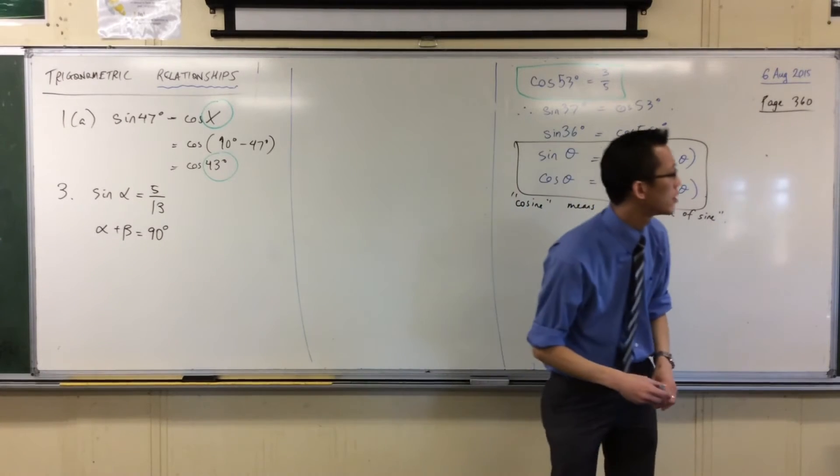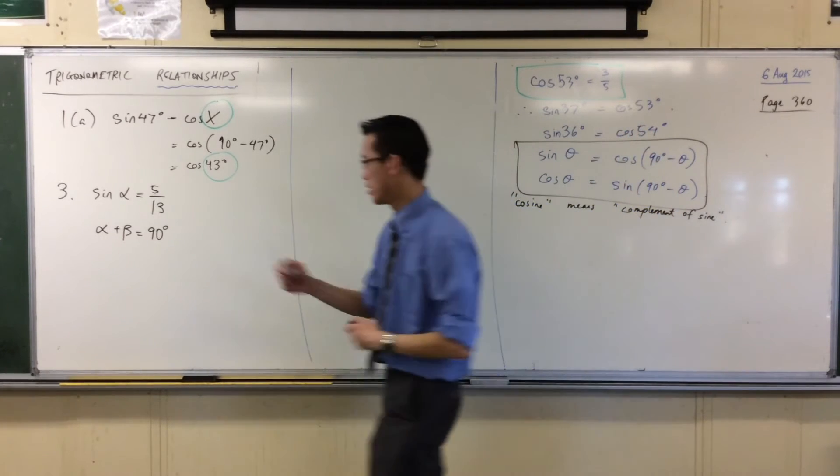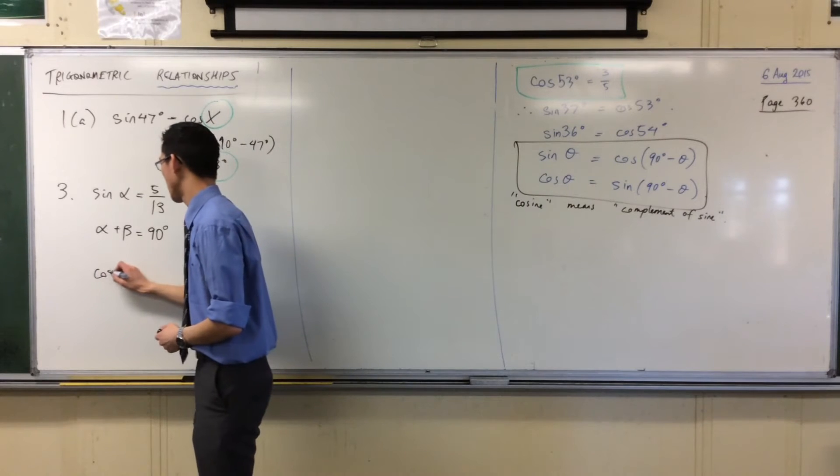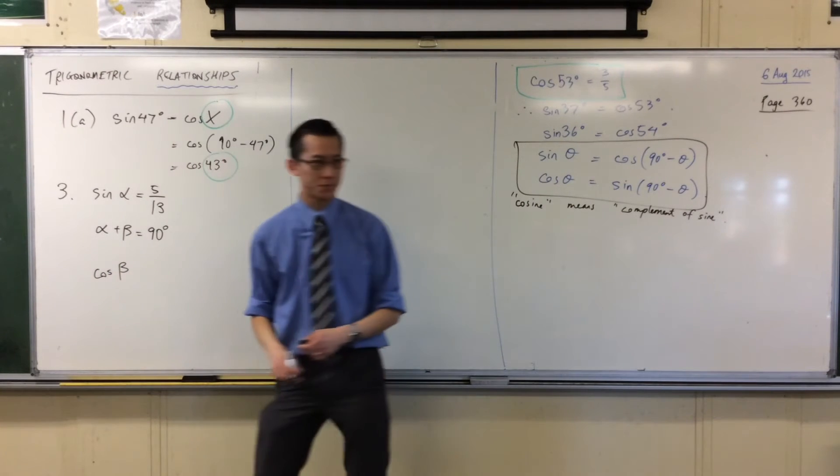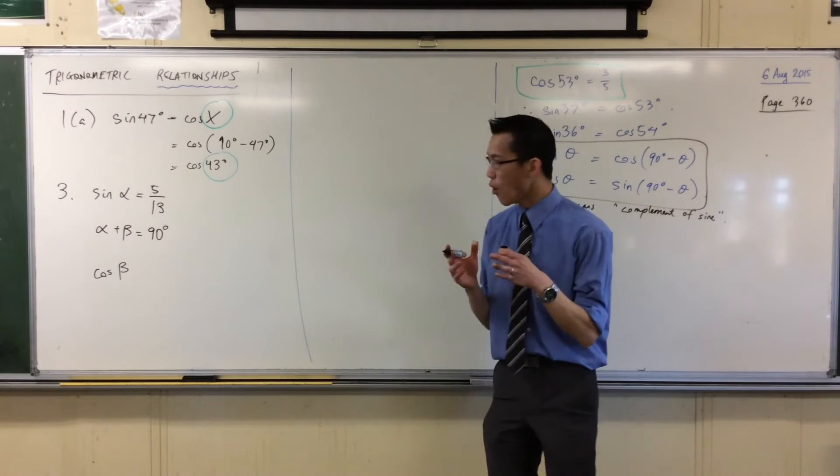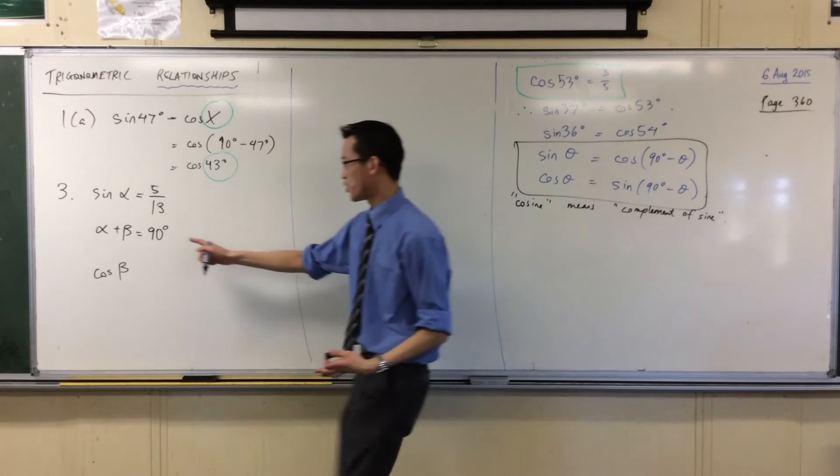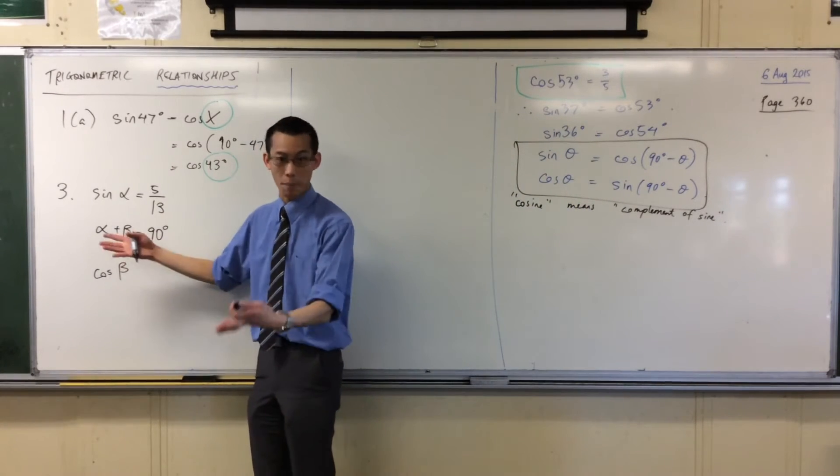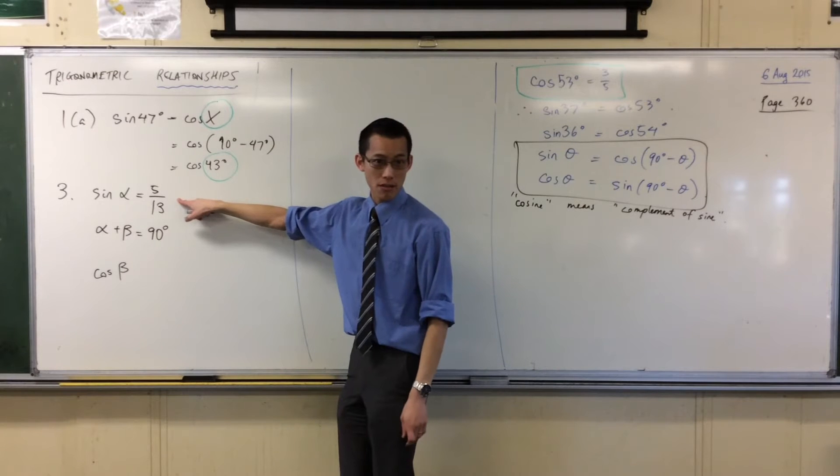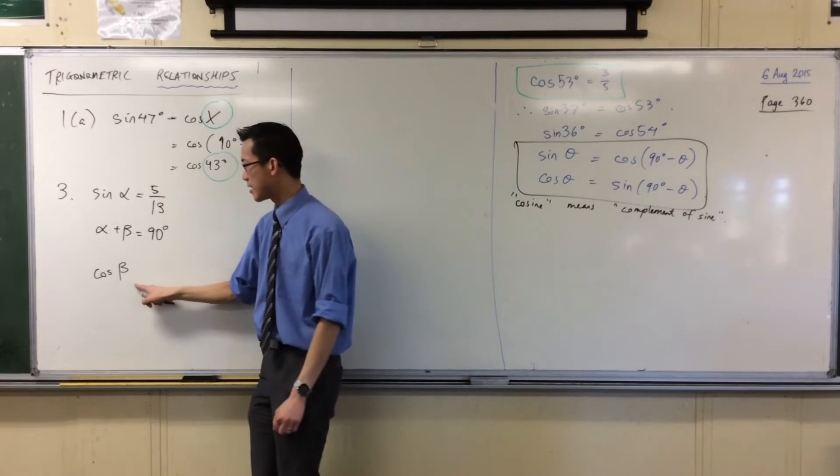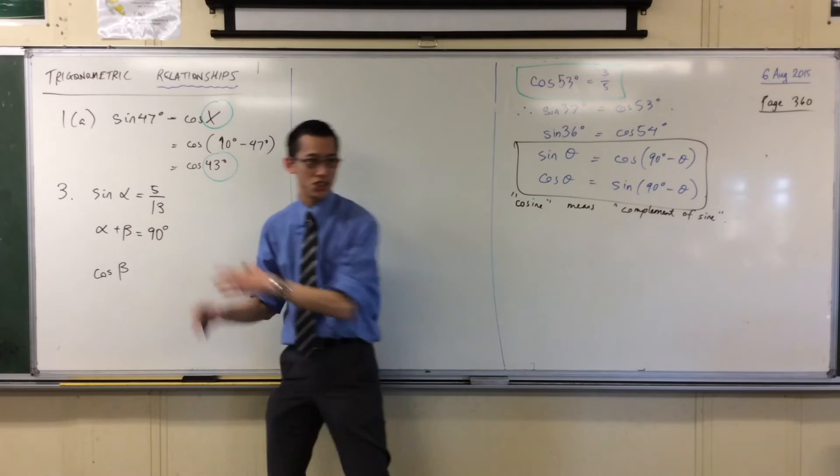They ask for three things. They want cos beta, cos alpha, sine beta. Okay, so let's start here. Cos beta, right? Now, all I know about these two angles, apart from the fact that they are complementary, is I know this. So I can get this in terms of this, if I use this relationship.